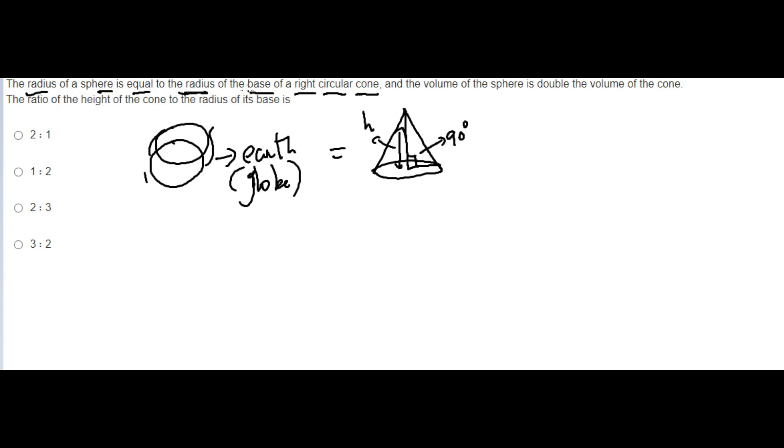What they've given is the radius, and both the sphere and right circle cone are equal. So radius of sphere equals radius of cone.